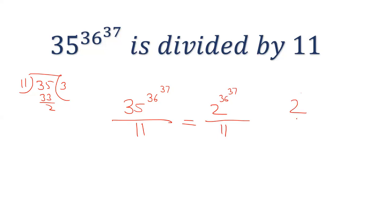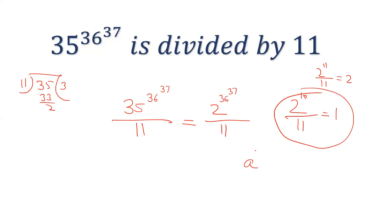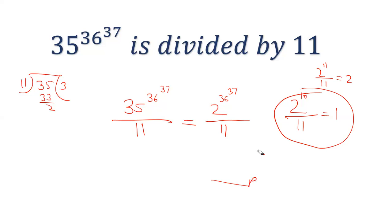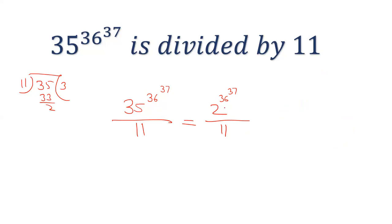Since 2 to the power 10 divided by 11 gives remainder 1 — by Fermat's Little Theorem, a to the power (p minus 1) divided by p equals 1 — we need to express the exponent 36^37 in terms of multiples of 10. So we focus on 2 to the power 10.